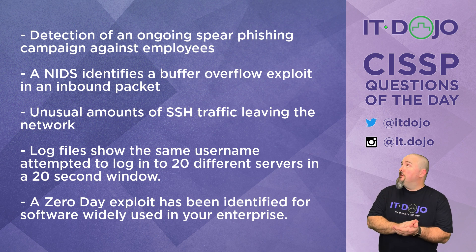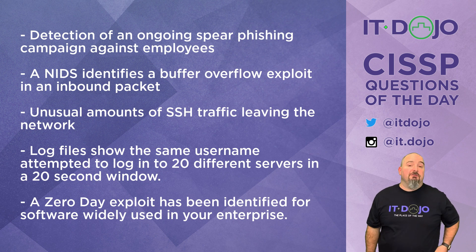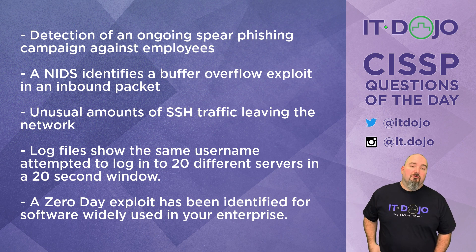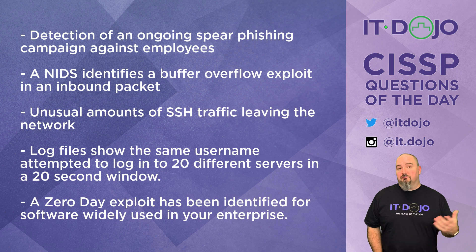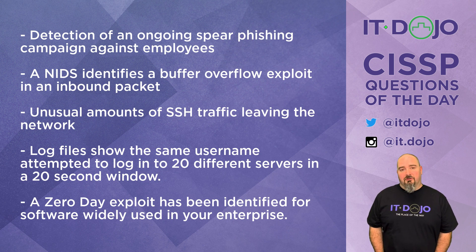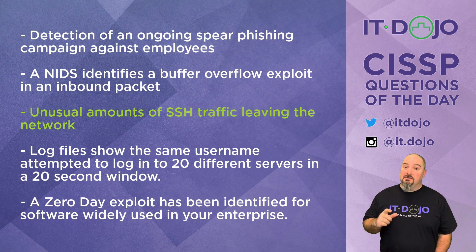Choice number three says that you have an unusual amount of SSH traffic leaving your network. The traffic's leaving your network — going out, not trying to come in. This, unfortunately, is an indication of compromise. If you have a system or segment of your network that doesn't normally send a lot of SSH traffic and now it is, that's an indication that something bad may have already happened. It's not an indication that you're under attack; it's an indication that somebody attacked you and was successful — you are now compromised, and they are taking advantage of that compromise.